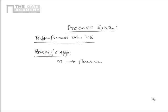Bakery's Algorithm is defined on two important data structures. The first is an array of boolean variables called 'choose' (or 'select'), where each of the n variables can take either true or false. The second is an integer array called 'number', which also has n integer variables.